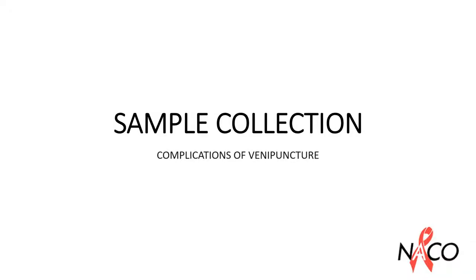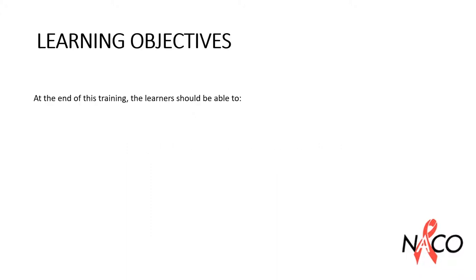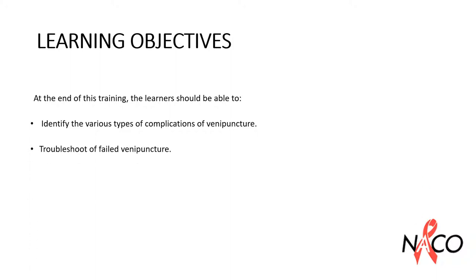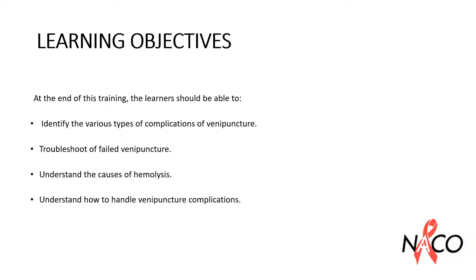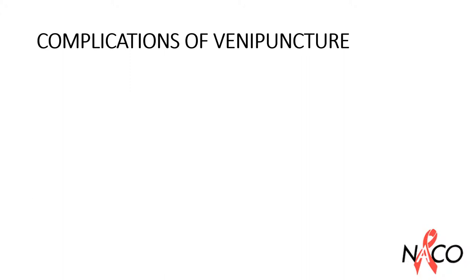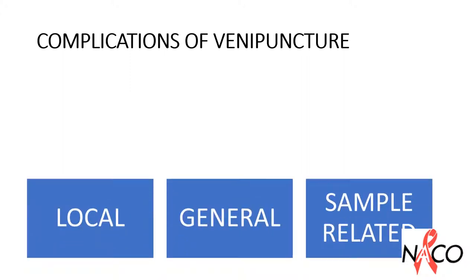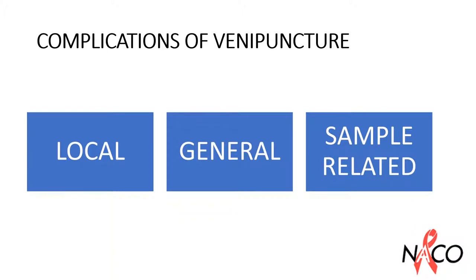Chapter: Sample Collection Topic — Complications of Venipuncture. At the end of this training, the learner should be able to identify the various types of complications of venipuncture, troubleshoot a failed venipuncture, understand the various causes of hemolysis of samples, and understand how to handle venipuncture complications. The complications can be local, general, or sample related.